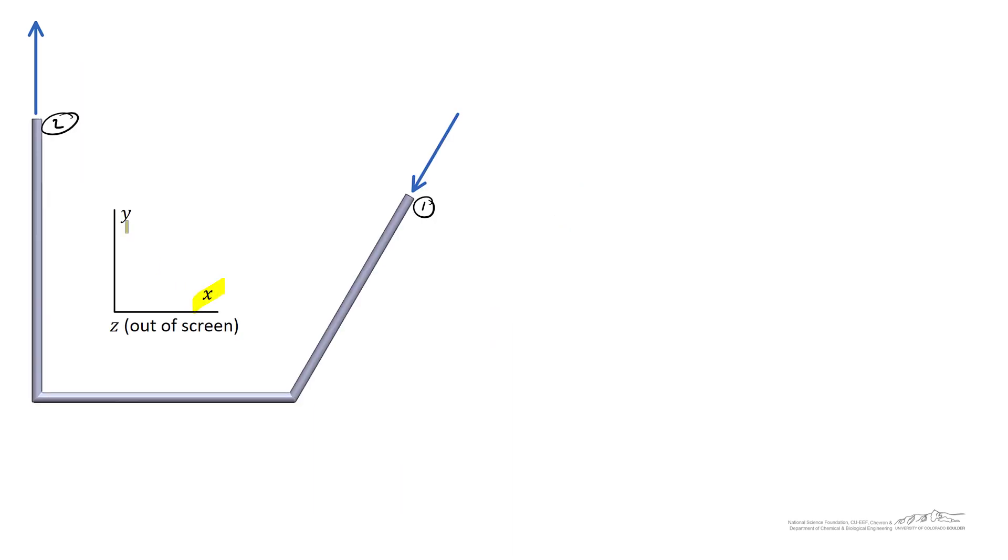We've got a standard coordinate system with x to the right, y going upward, and z coming out of the screen. Let's call this velocity vector v1 and this velocity vector v2. We'll decompose both velocity vectors into their x, y, and z components.